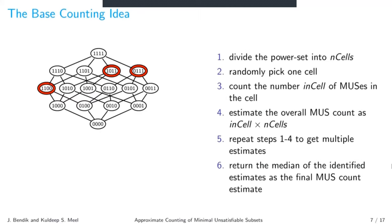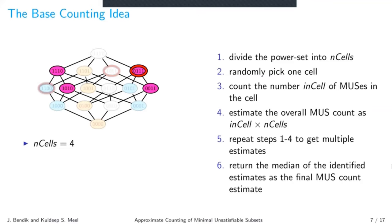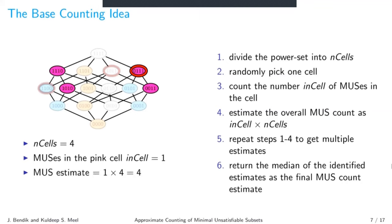The high-level idea: given a set of four Boolean clauses with three MUSes (shown in red), we divide the power set into several small cells — say four cells. We randomly choose one cell, count the MUSes in it (say one), and estimate the total count as the number of cells times MUSes per cell, giving four. To achieve the required confidence, we repeat the process several times — repeatedly dividing, sampling a cell, counting MUSes, and estimating. We compute the final estimate as the median of individual estimates.